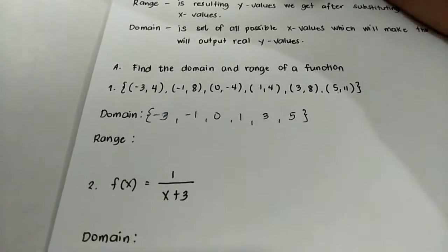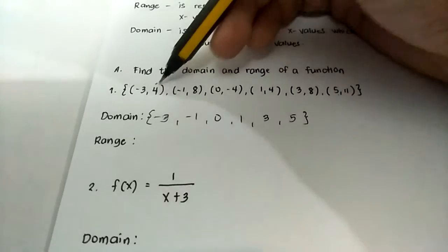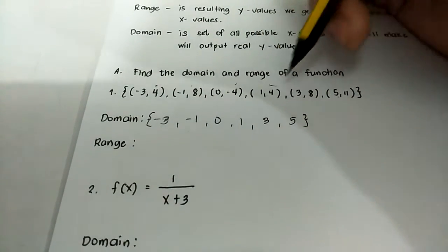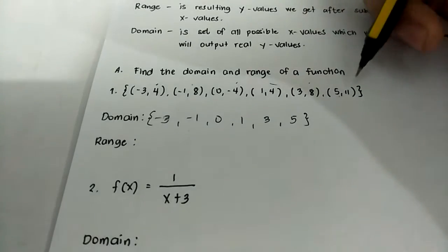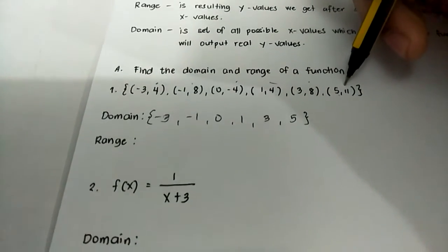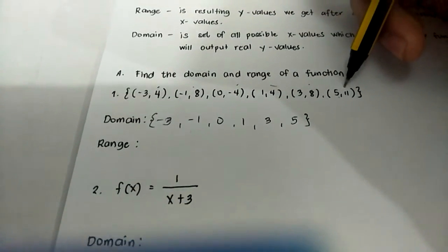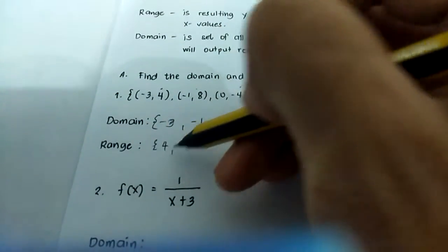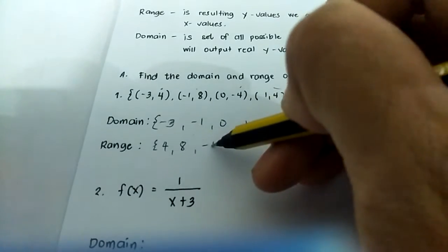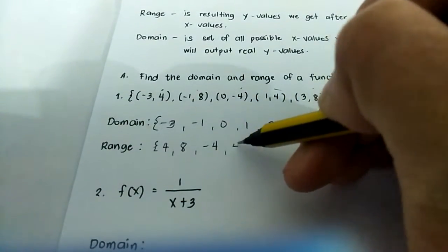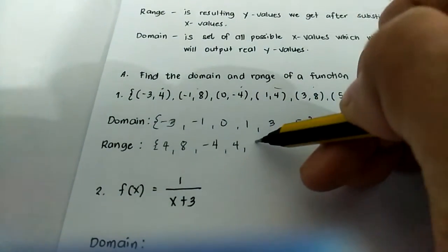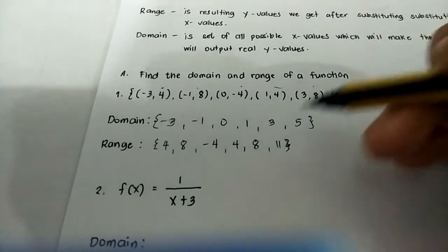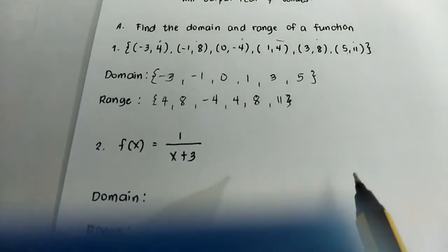That is our domain. And for the range, those are all y-values: negative four, four, eight, and eleven. That is our range.